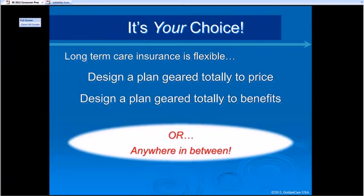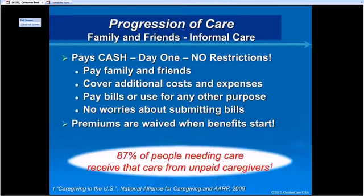Let me show you what long-term care insurance will do for you. When I sell a client long-term care insurance, I like the United Omaha product. This product starts paying you cash day one, no restrictions. The minute you can't perform two of six activities of daily living, they'll give you a monthly check you can use to pay family and friends to care for you, cover additional costs, or pay bills. I had a lady ask if she could gamble with it — she said they have internet gambling now and wanted that kind of plan. I laughed and said to each their own, but the fact is the money is available to you day one.